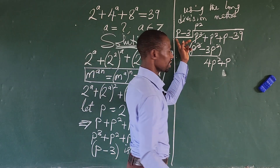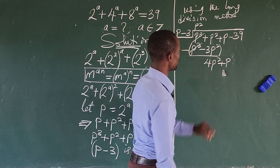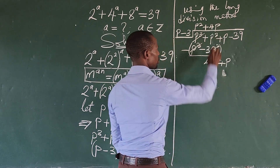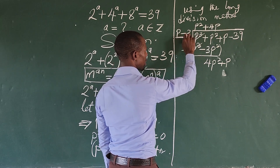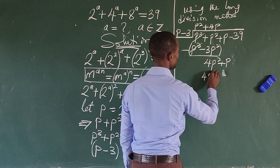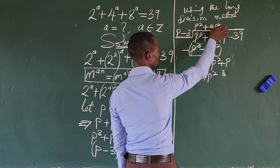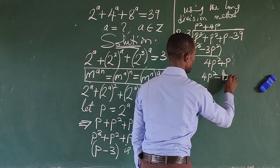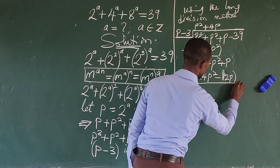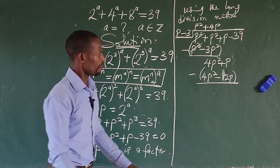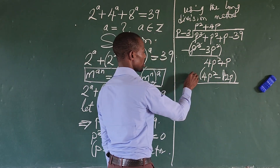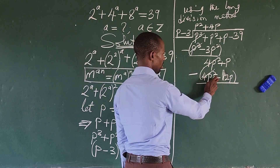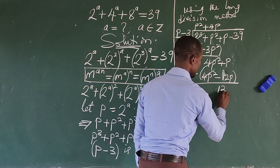Again, we go with the division a second time. p into 4p squared gives us plus 4p. We use plus 4p to multiply p, which gives us 4p squared. Then plus 4p times minus 3 gives us minus 12p. We subtract for the second time. Plus p squared minus 4p squared comes to plus — again. So plus p plus 12p gives us 13p. We bring down the last term, which is minus 39.